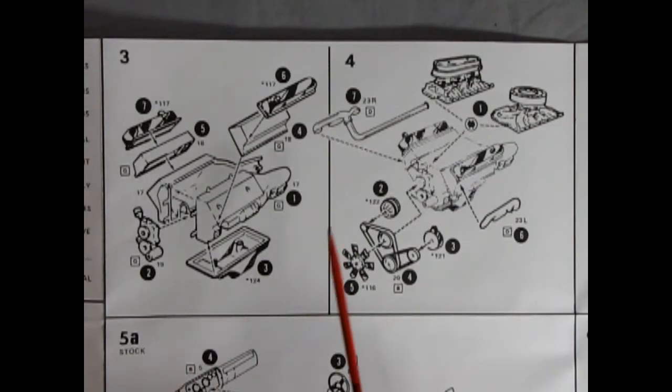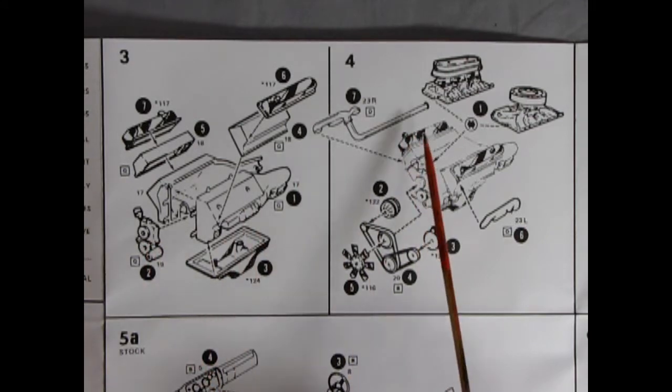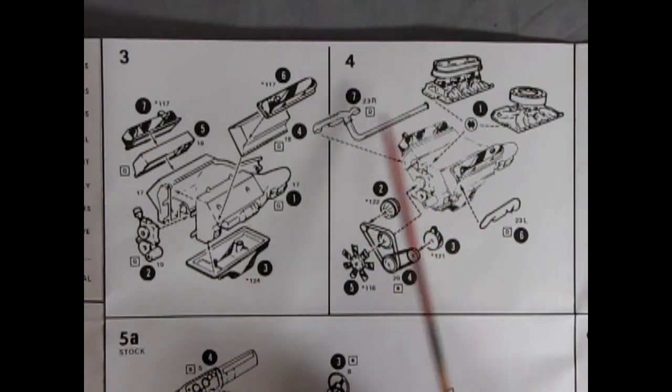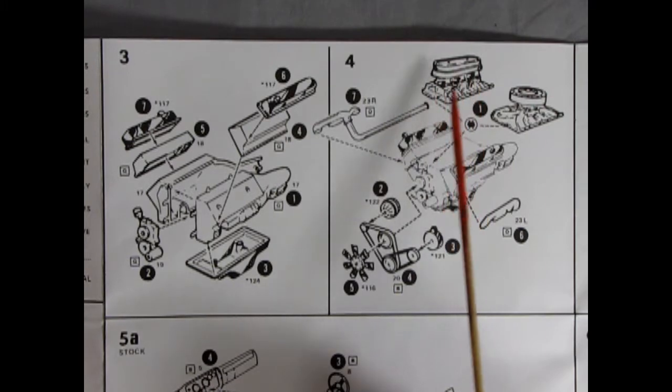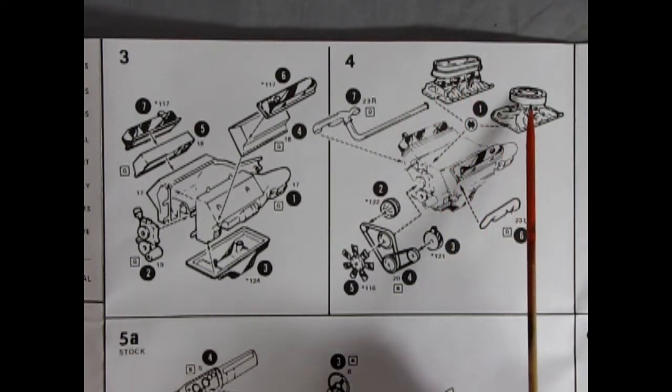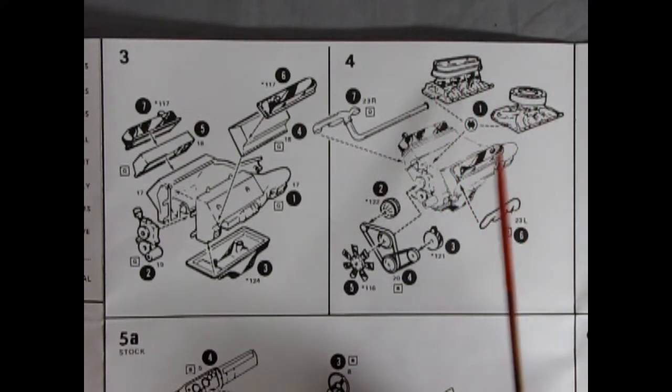Step three and four is the engine assembly. Here we have a left and right engine block with the transmission molded in place, cylinder heads, valve covers, oil pan, front engine cover, and then into step four we have the exhaust manifolds left and right as well as our alternator, power steering pump, belts and fan, and then your option of the 1971 446 pack or the 1974 air cleaner four barrel carburetor.